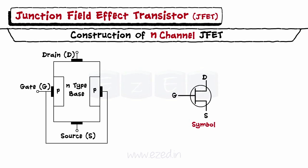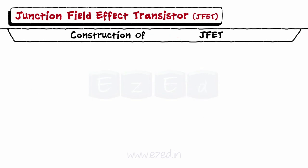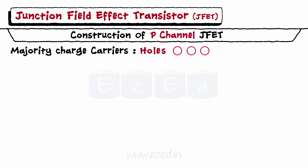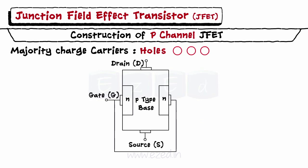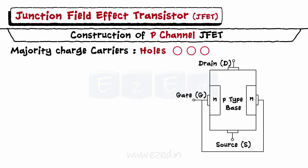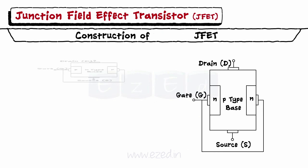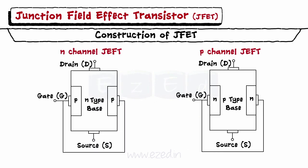Similar to BJT, JFET also has two P-N junctions. For constructing a P-channel JFET, we take a P-substrate and dope N-type semiconductors at the two ends to form the gate. Thus, the two types of JFETs are constructed as shown.